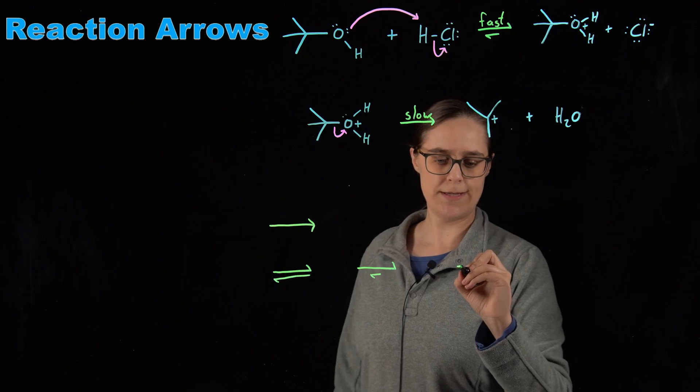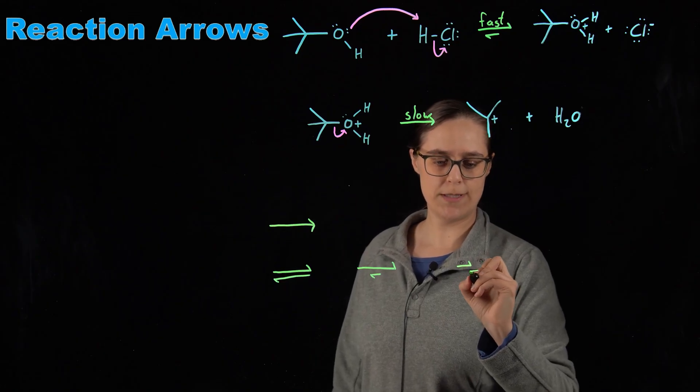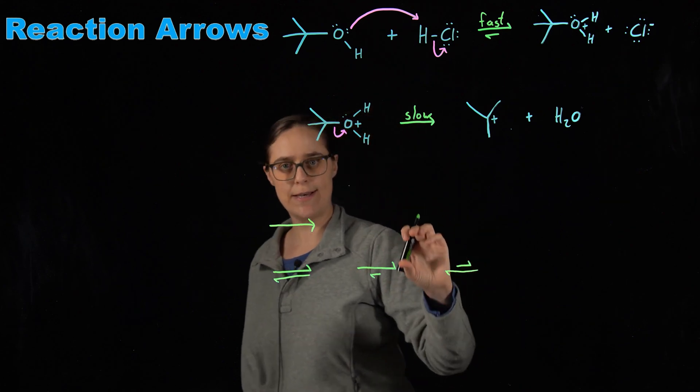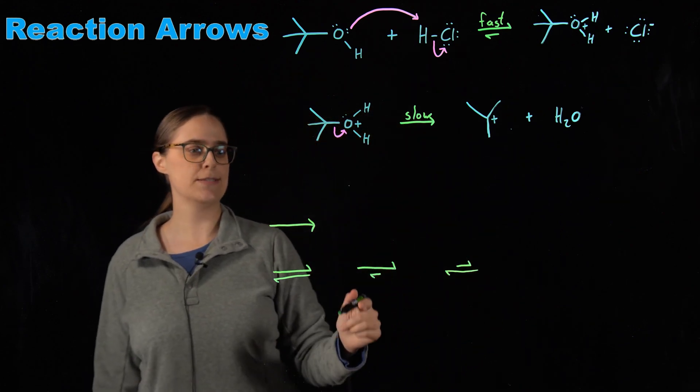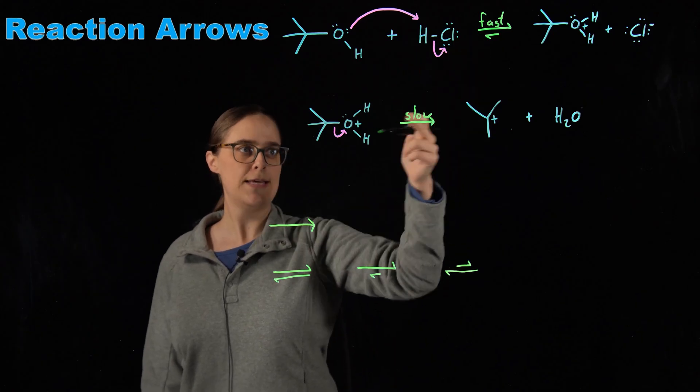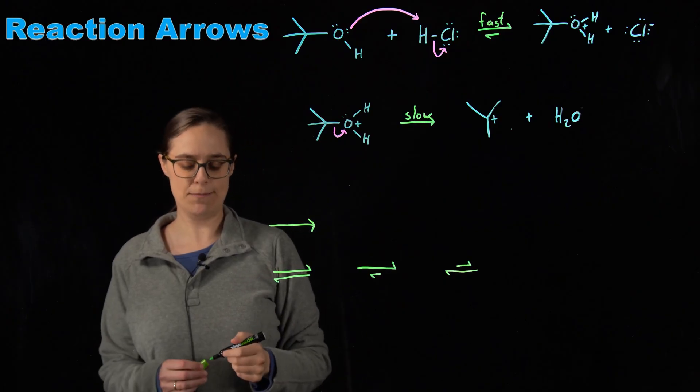The other case in which the bottom line pointing at the reactants is longer, that means there would be a higher concentration of reactants. So these are all straight lines. You would see them as your reaction arrow in the middle of these steps.